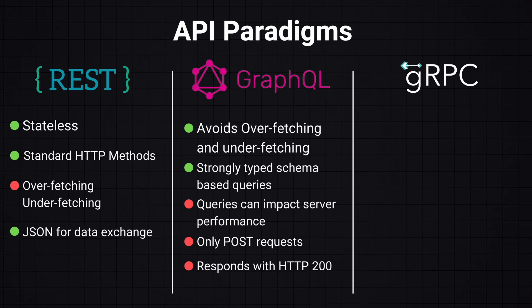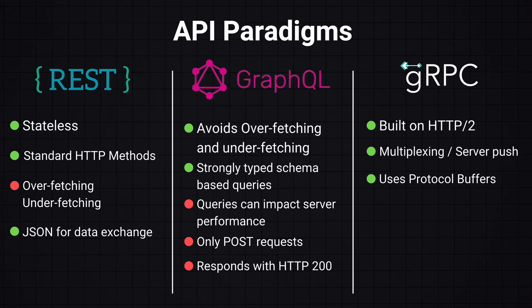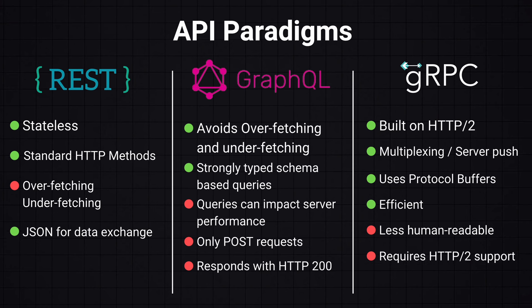gRPC stands for Google Remote Procedure Call, which is built on HTTP/2, providing advanced features like multiplexing and server push. It uses protocol buffers, which is a way of serializing structured data, making it efficient in terms of bandwidth and resources — especially suitable for microservices. The downside is that it's less human-readable compared to JSON and requires HTTP/2 support to operate.